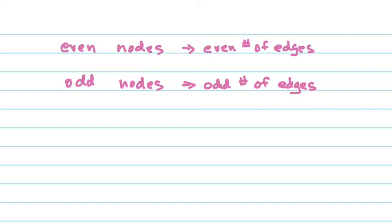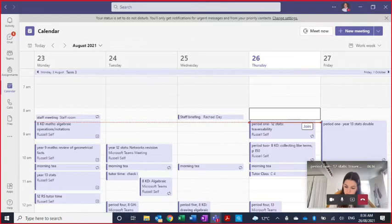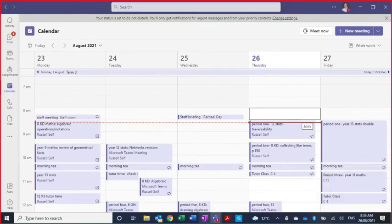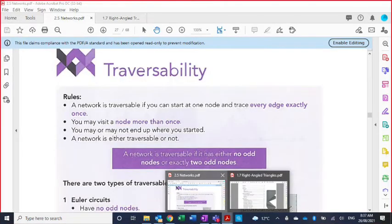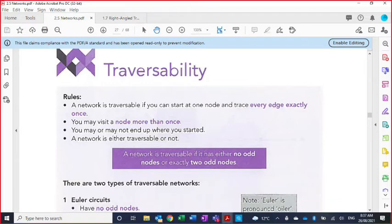So what we're going to do is we're going to look at the two rules, look at an example really quickly, and then I'll set you on your way. So we'll just go to the book. Okay, traversability. So a couple of rules. A network is traversable if you can start at one node and trace every edge exactly once. In other words, you're not backtracking. So that's the first thing you need to know. You can trace every edge exactly once.